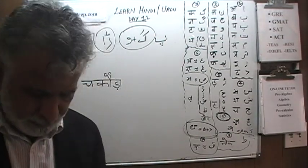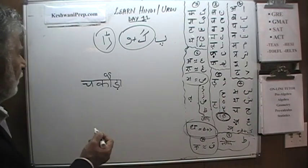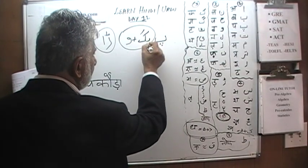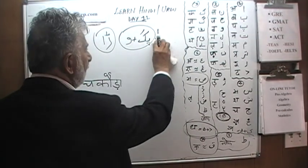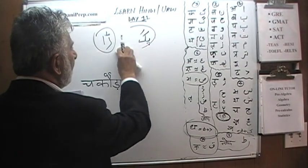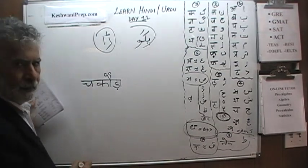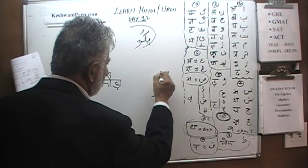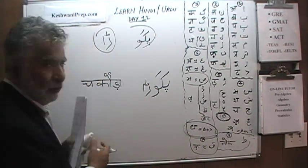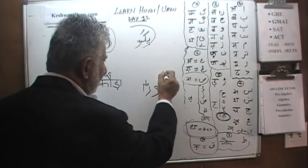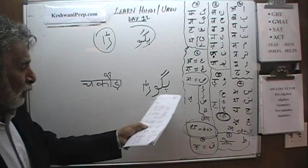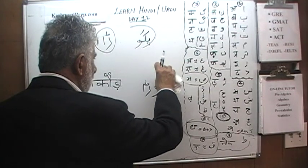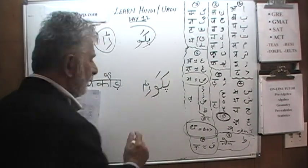Hindi is almost very easy to put together because you don't have to join anything. Let's join them in Urdu. This part becomes smaller and comes over here, then this guy moves closer. You have to be careful not to place the mark like this — that would make it Ga and the word would become Pagoda with Chhoti Oki Matra. We don't need Pagoda; we need Pakoda with a longer O.